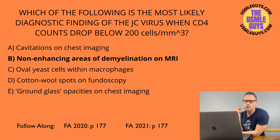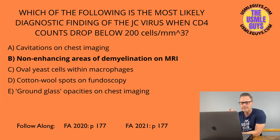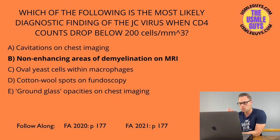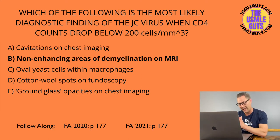The JC virus leads to progressive multifocal leukoencephalopathy, characterized by neurological findings: coordination difficulties, walking difficulties, visual disturbances, weakness, speaking difficulties, facial drooping, and personality changes. If the CD4 count is below 200 and you see these findings, think JC virus and PML. Neuroimaging with PML will demonstrate cerebral atrophy.